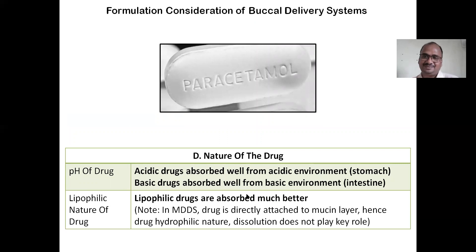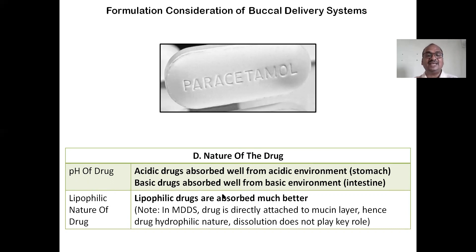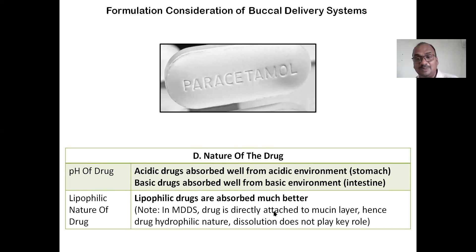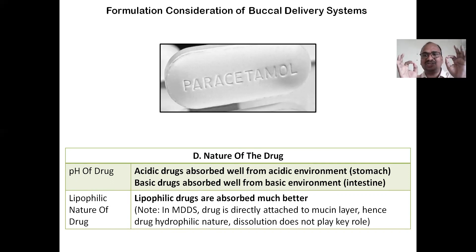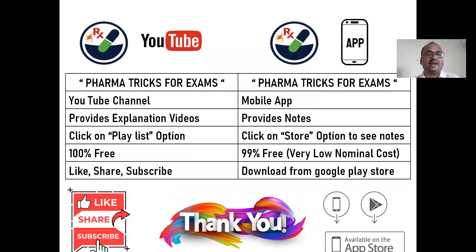Factor D is the nature of the drug. pH of the drug — if the drug is acidic, it is absorbed well from an acidic environment; if basic, from the basic intestinal environment. Lipophilic nature — lipophilic drugs are absorbed much better than hydrophilic drugs, because the formulation does not need to undergo disintegration and dissolution; more preference is given to lipophilic drugs. If the drug has higher lipophilicity, this formulation is better suited. That concludes this session — you can download the app and enjoy the reading.